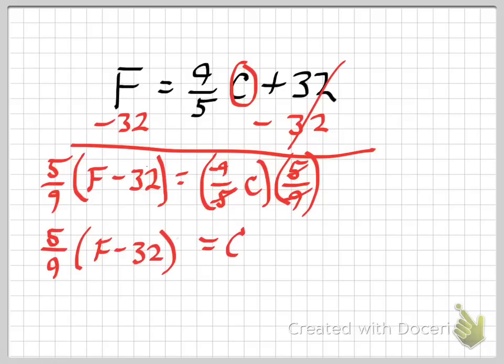So if I want to know what room temperature is in Celsius, take 70 degrees and put it in here, and then multiply by 5 ninths. And I think you'll get, I believe it's about 22 degrees.